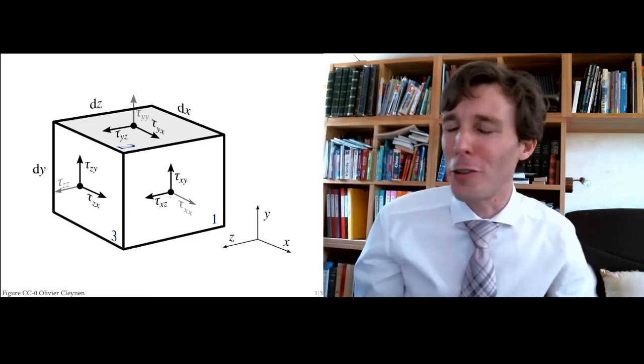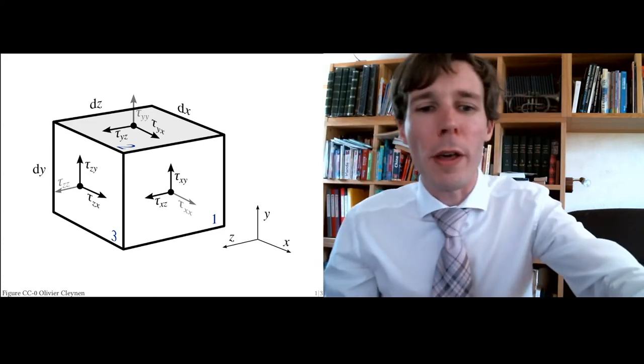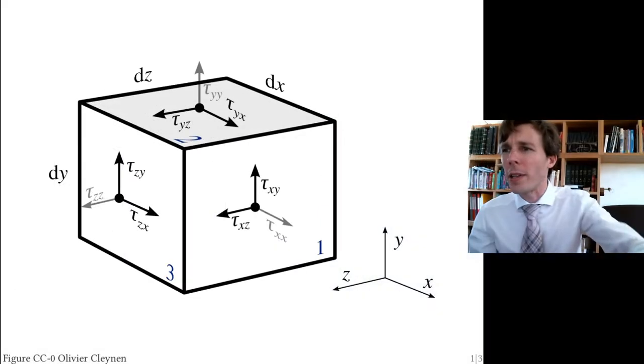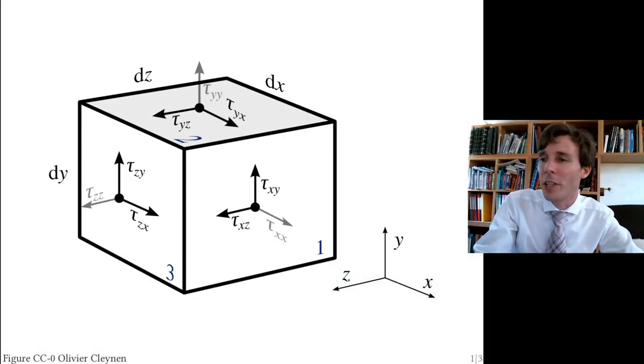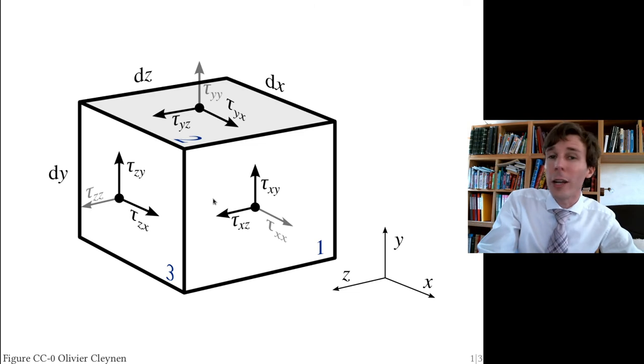So we end up with drawings like this one here, where we have on each of the six faces of the cube three components of shear. And one of those is very strange—it is a component of shear that is perpendicular to the area.